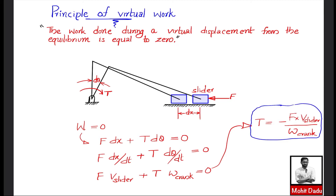This is the key result from the Principle of Virtual Work. You do not need to draw free body diagrams or calculate forces transmitted through each link — you can directly evaluate the required torque. No graphical force methods are needed, though you do need to construct a velocity diagram to find the slider velocity. The negative sign indicates the torque must be applied in the direction opposite to the angular displacement.